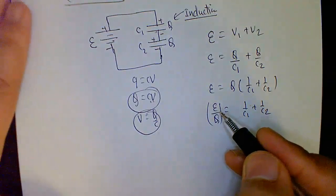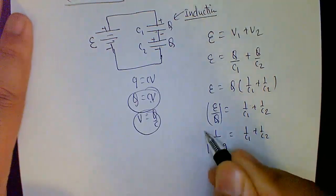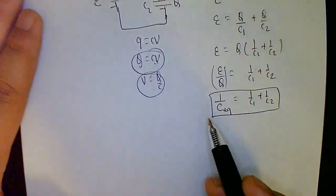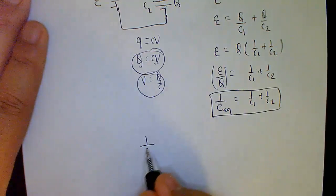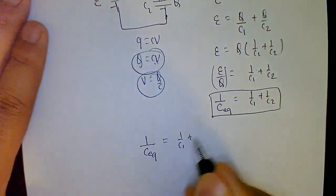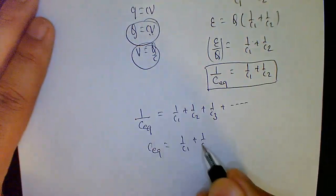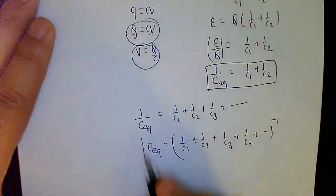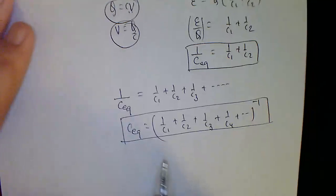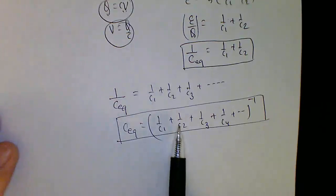Since Q/V = C (capacitance), we have 1/C_equivalent = 1/C1 + 1/C2. This is exactly opposite to the resistor combination — don't get confused. In general, for capacitors in series: 1/C_equivalent = 1/C1 + 1/C2 + ... Importantly, combining capacitors in series actually decreases the total equivalent capacitance due to this inverse relationship.